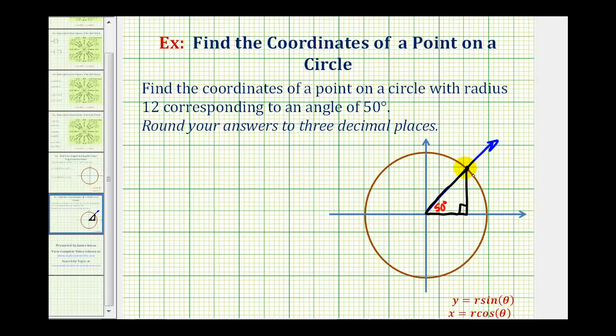So if this is the point we're looking for with coordinates x comma y, we can label the opposite side of our triangle y, the adjacent side x, and the hypotenuse would be the radius of the circle, which we know is 12.